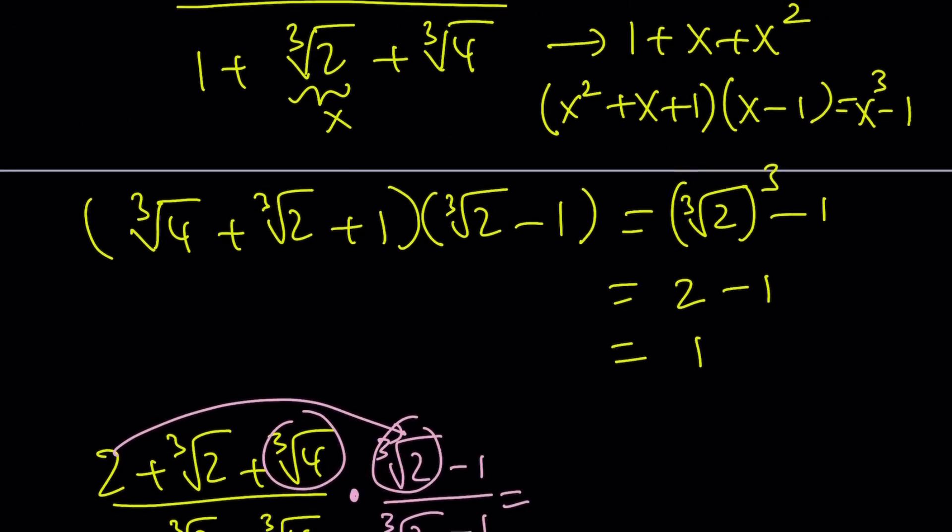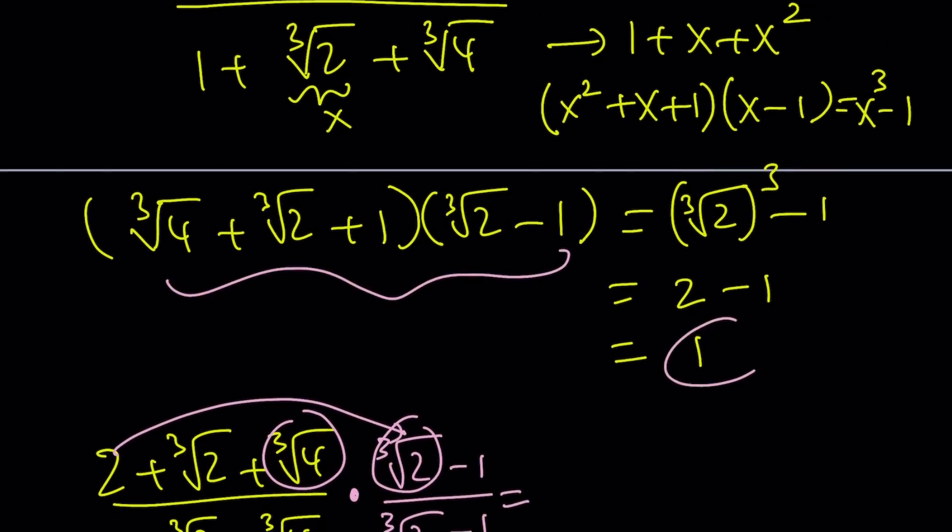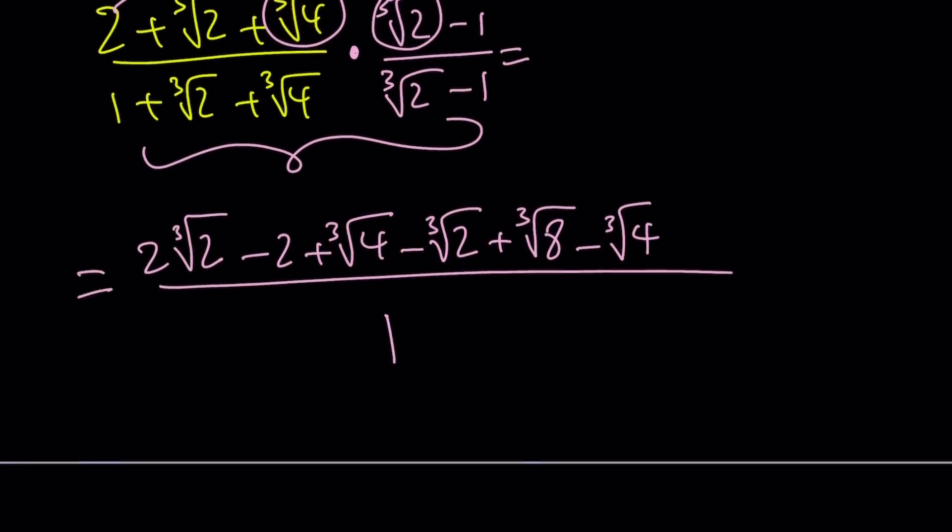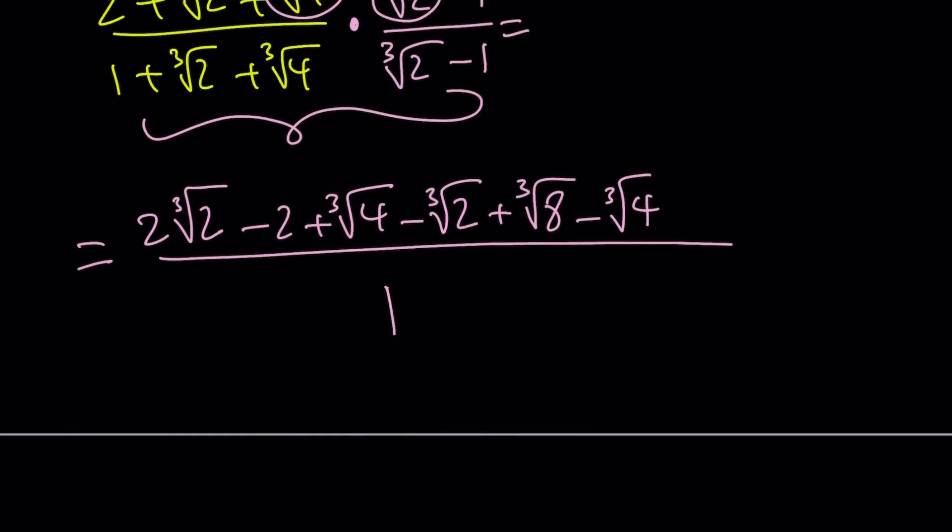Remember when we multiply these two expressions, we got 1 from here. Now, cube root of 8 is 2. So 2 minus 2 is 0—they cancel out. Cube root of 4 and cube root of 4. We end up with 2 apples minus 1 apple. That is an apple, which is cube root of 2. That's the answer? Are you serious? Yes, that is the answer. And this brings us to the end of the first method.